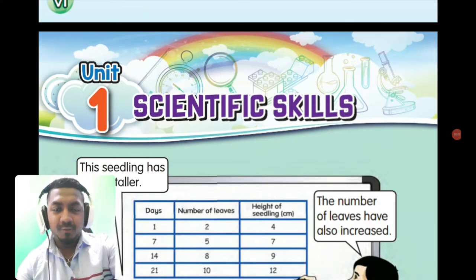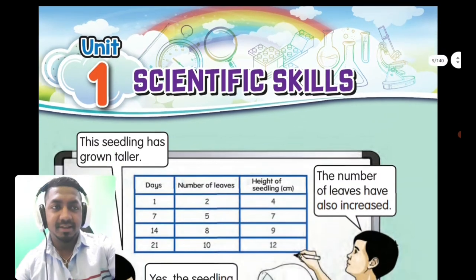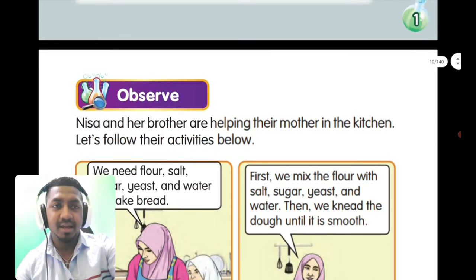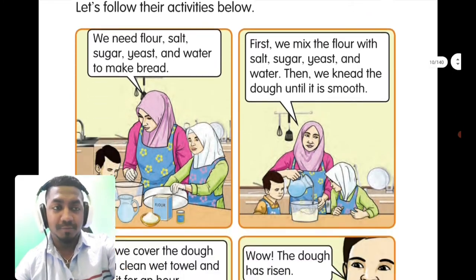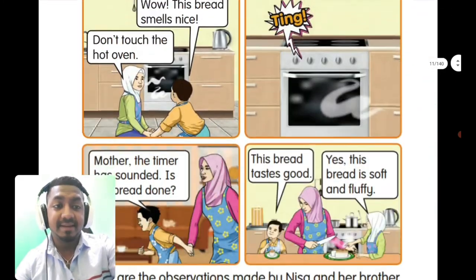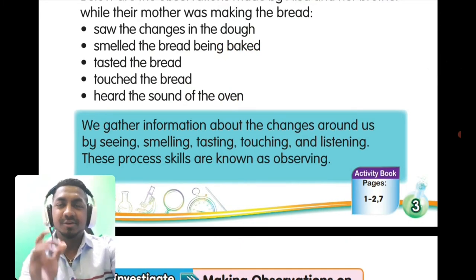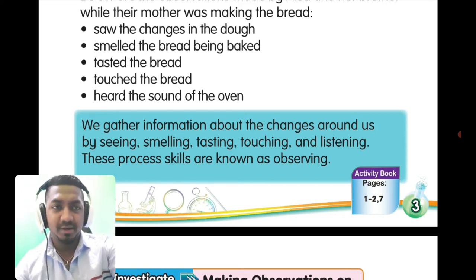In Unit 1, we are going to study about scientific skills. The first skill is observe, which is observation. How do we observe? We observe through our five sensory organs. Normally we use the word 'observation' to refer to seeing only, but according to science, we can observe using all five sensory organs.